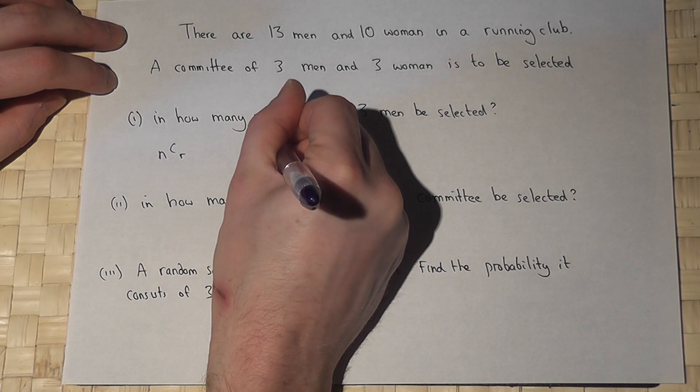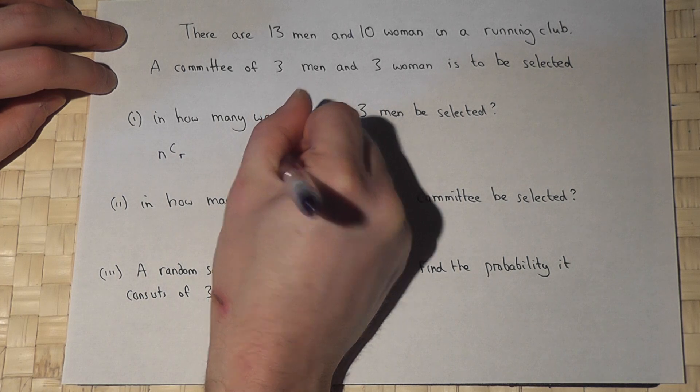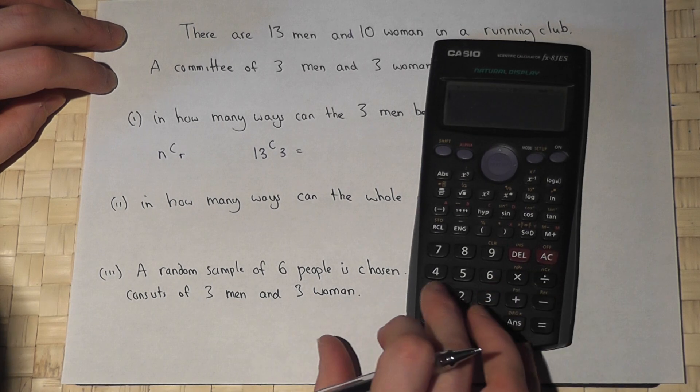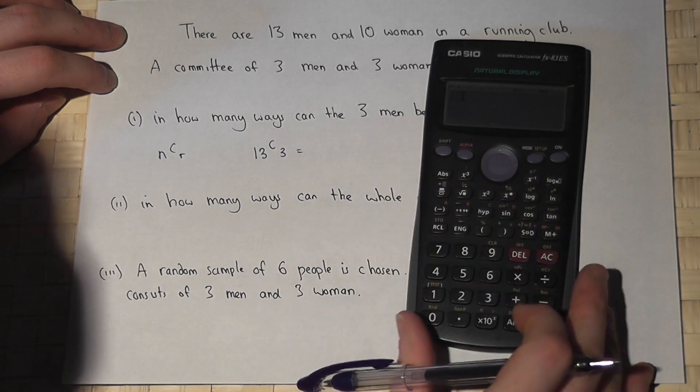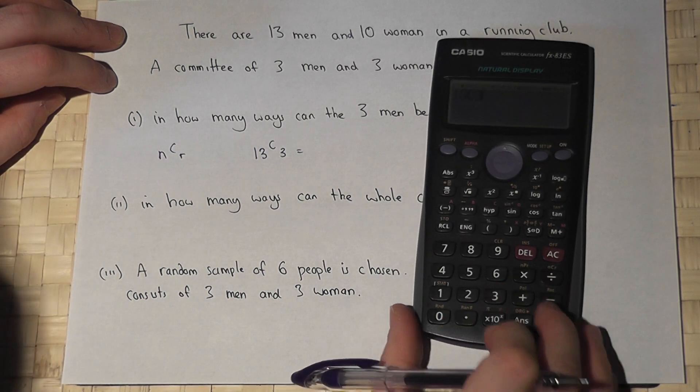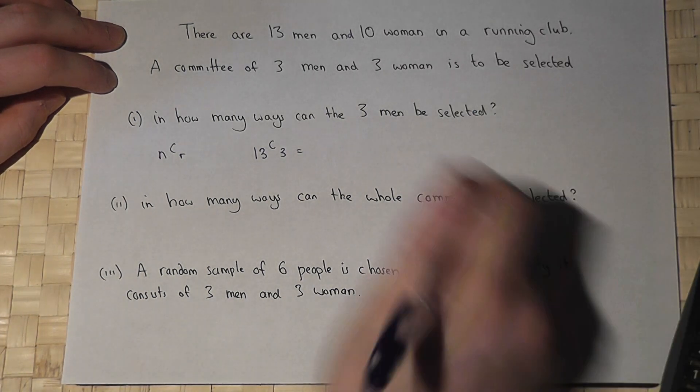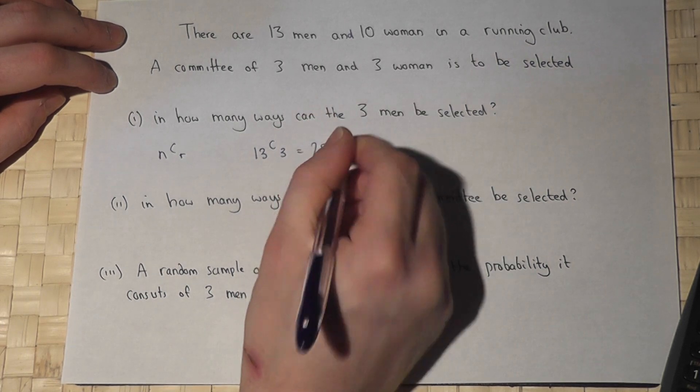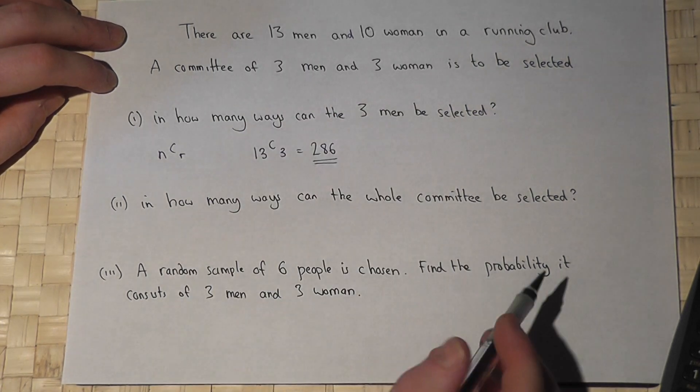If we enter 13C3, it works out exactly how many combinations there are. So 13, shift, the divide button brings nCr up, 3, press enter—it's 286 different ways of picking three men out of 13.